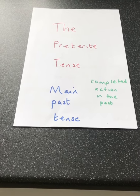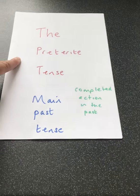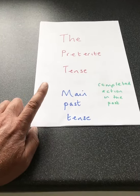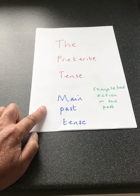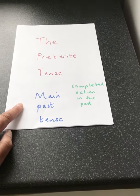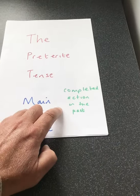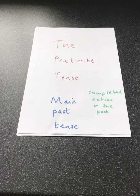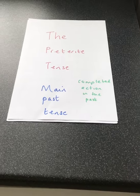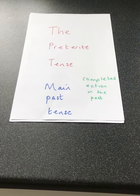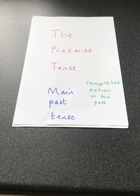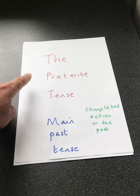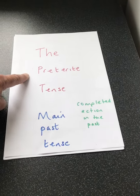So the preterite tense then. What is the preterite tense? Well, the preterite tense — you can see here I've written it — is the main past tense. It refers to a completed action in the past. So you've got things like I ate, you drank, he arrived, we left. Those are all examples of the main past tense and therefore they are the preterite tense.